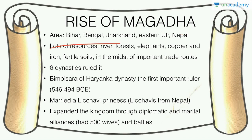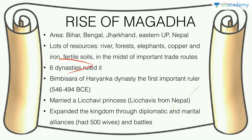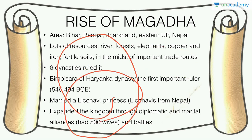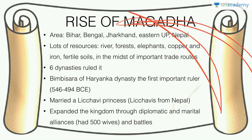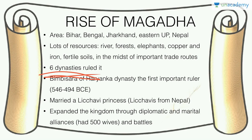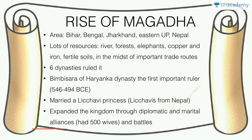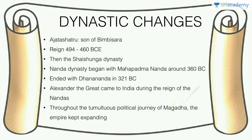Magadha covered the area of Bihar, Bengal, Jharkhand, Eastern UP, Nepal, etc. It was very prosperous due to abundant resources — the Ganga and its tributaries, forests, elephants, copper and iron mines, fertile soils, and important trade routes to China, Myanmar, etc. Six dynasties ruled it. The important Haryanka dynasty's Bimbisara was the first important ruler of Magadha. He married a Lichchhavi princess and expanded the kingdom through diplomatic and marital alliances. His son was Ajatashatru.